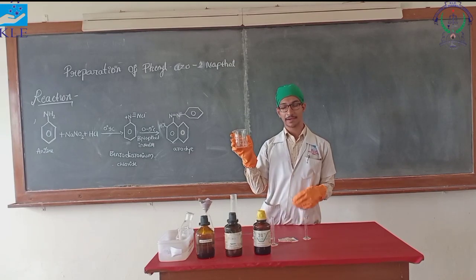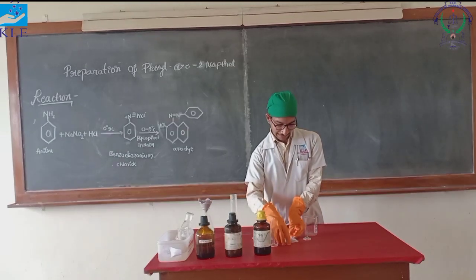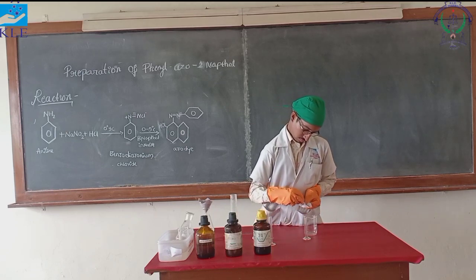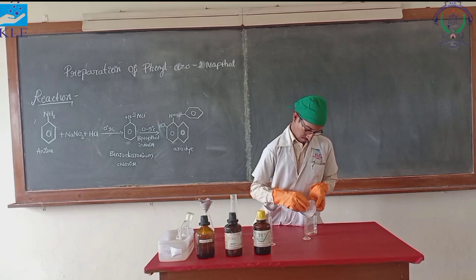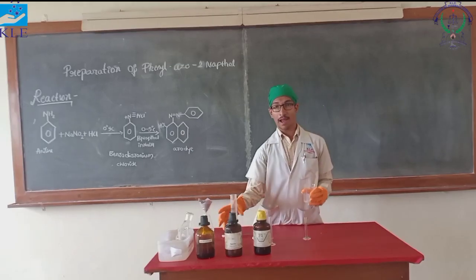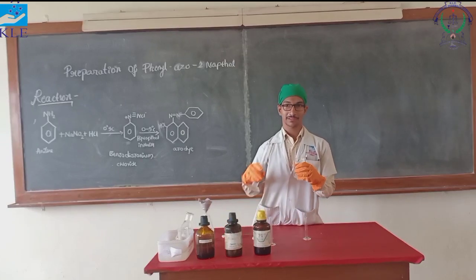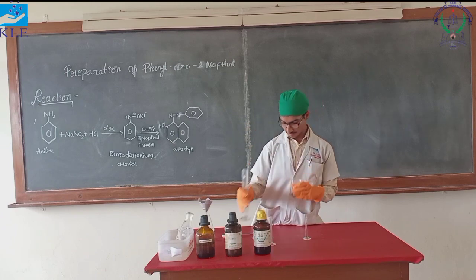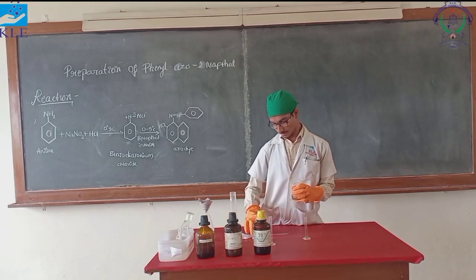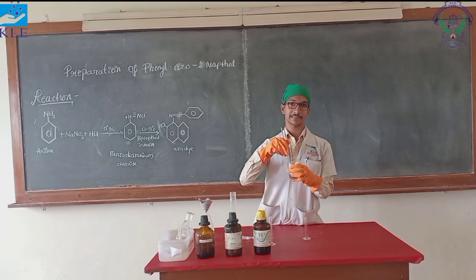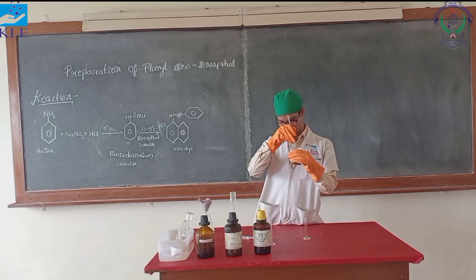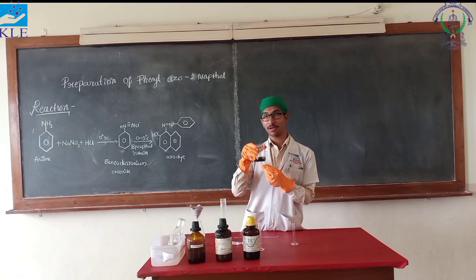Now take a 250 ml beaker. To this add a weighed quantity of 7 grams of 2-naphthol, that is beta naphthol, and dissolve it with 10% sodium hydroxide solution, 60 ml. Stir it with the help of a glass rod to make it completely dissolve in the NaOH solution. After it completely dissolves, keep it also in the ice bath.